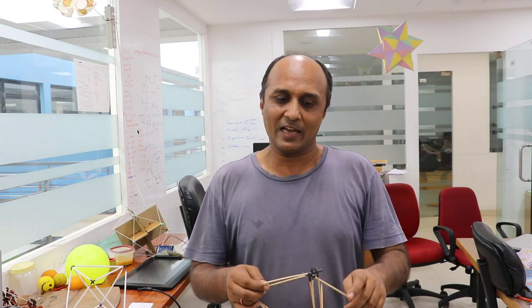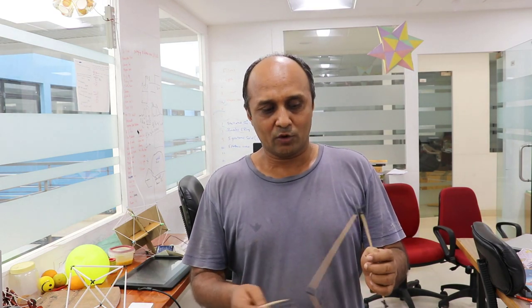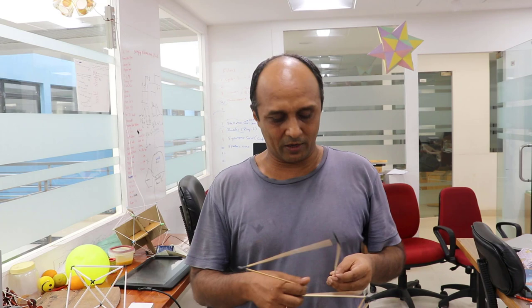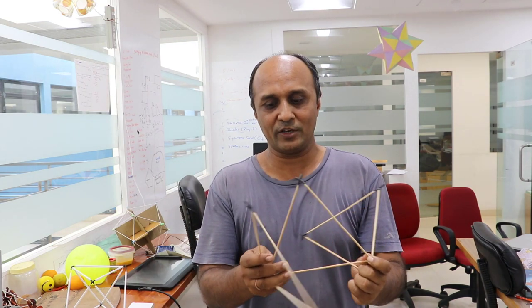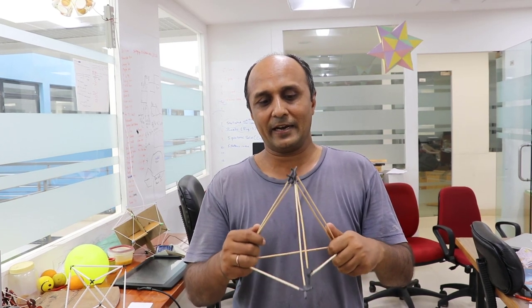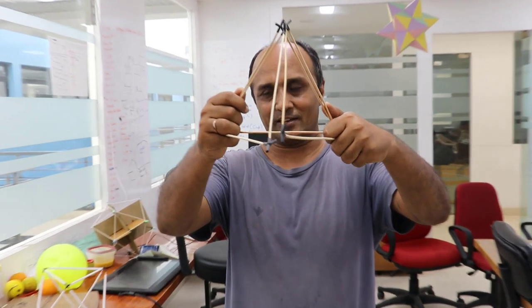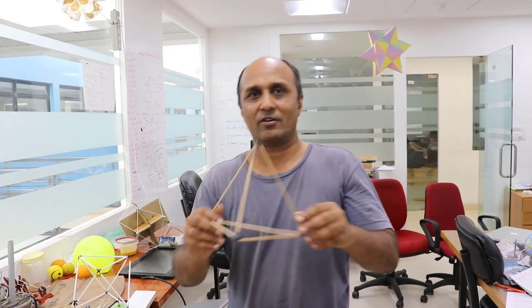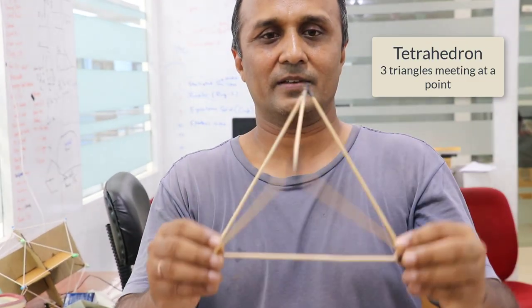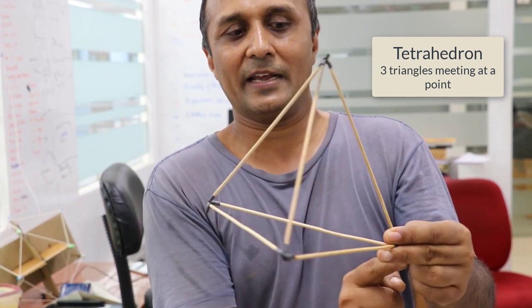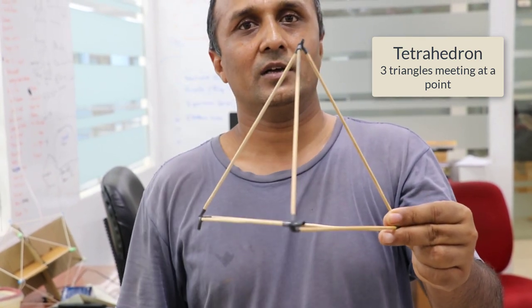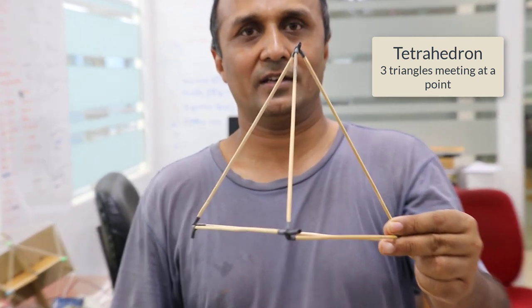For platonic solids, as we saw, we need at least 3 polygons meeting at a point. The simplest polygon being a triangle. So if we join 3 equilateral triangles meeting at a point we get this structure, called the tetrahedron — 3 equilateral triangles meeting at all 4 joints.